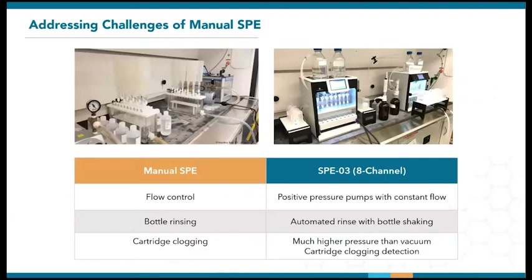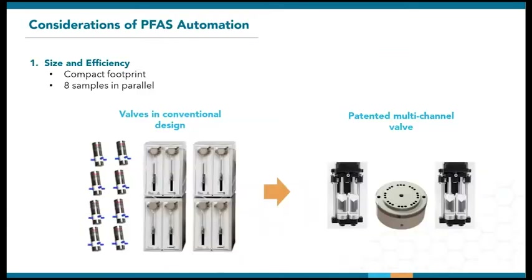These pictures are both taken at the Orange County Water District, who has been using the SPE03s for both Methods 537.1 and 533. As you can see, the automated systems are also quite compact. Next, I'll go through the considerations for achieving this automated solution. This section will be somewhat similar to my other presentation on automating SPE for different methods and matrices, so if you've already seen it, feel free to skip on.